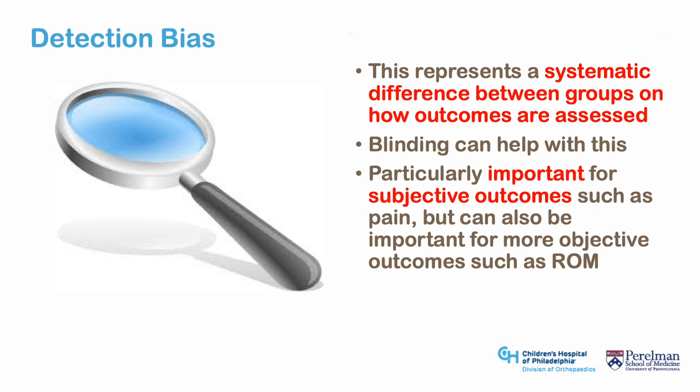Detection bias represents a systematic difference between how groups are assessed. Researchers want a positive study, and such studies get published more often, so there will be a desire to show a difference. Detection bias can differentially affect how subjects are assessed based on the group they are in. It may be protected against by blinding, using impartial raters like therapists not involved in the study, and using defined methodology for measurement. Subjective measures such as pain are specifically vulnerable, but can be mitigated through impartial collection methodology like text-based applications.